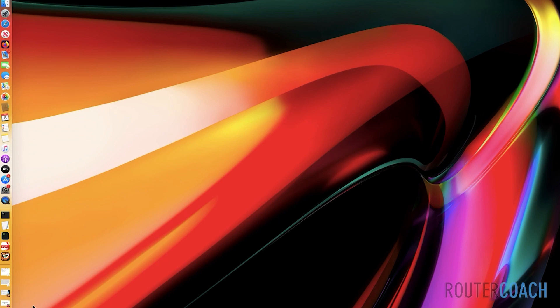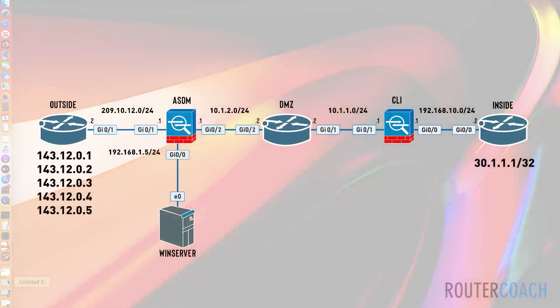Let's say we had the topology we've been working with — our DMZ, our inside, and a host. We've got some services running on our DMZ router that hosts from the outside need to access, but we don't want to expose our internal network topology and IP addressing schema to the outside network. This is a good use case for NAT, where the outside network can ping an address that gets translated to our real address, or vice versa, so it looks like the host is accessing an address that isn't part of our internal infrastructure.